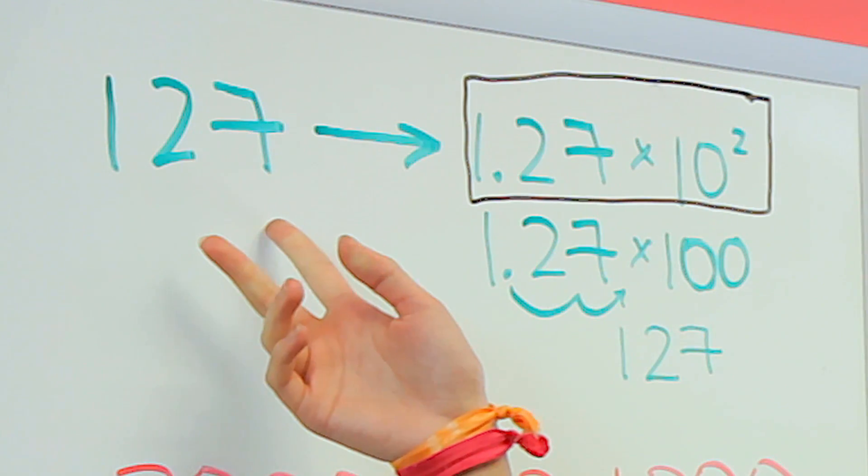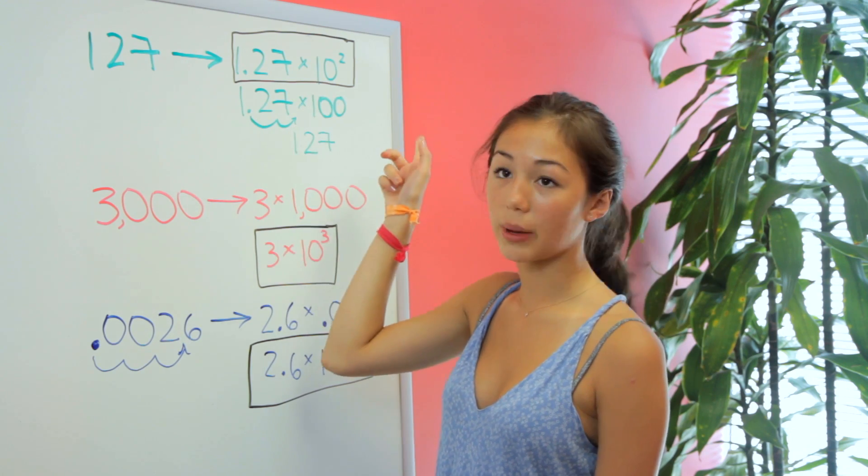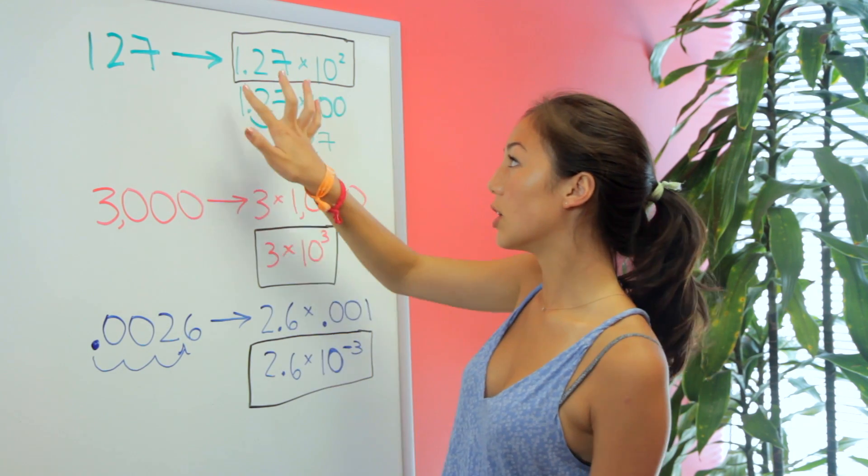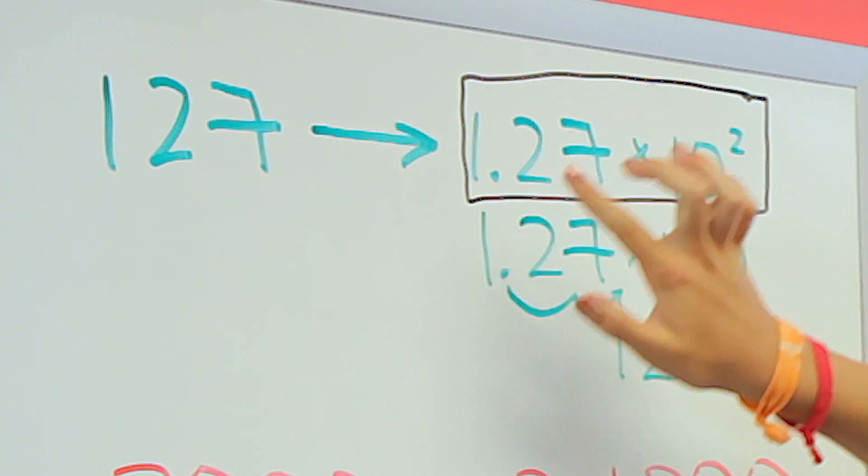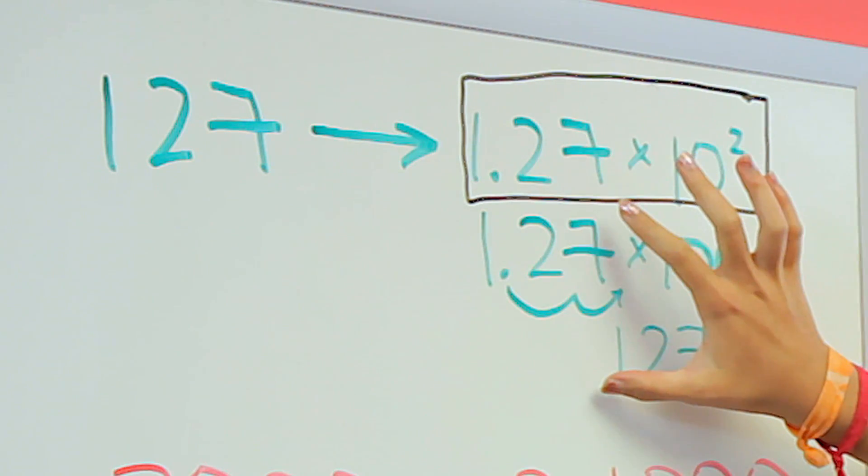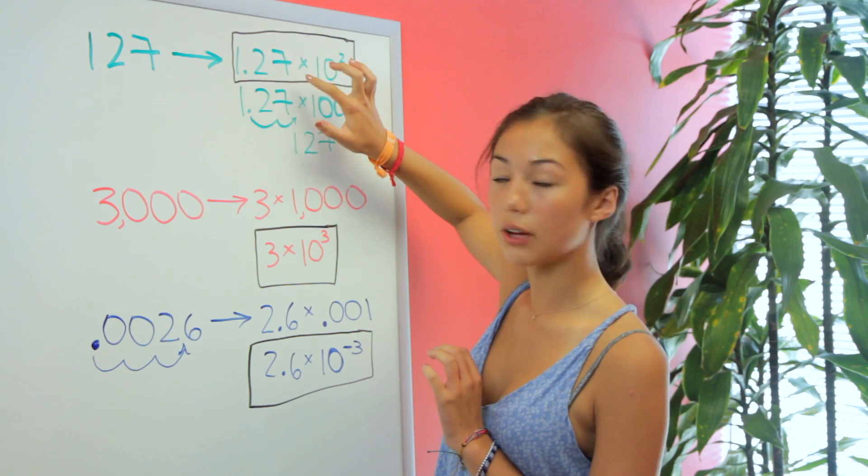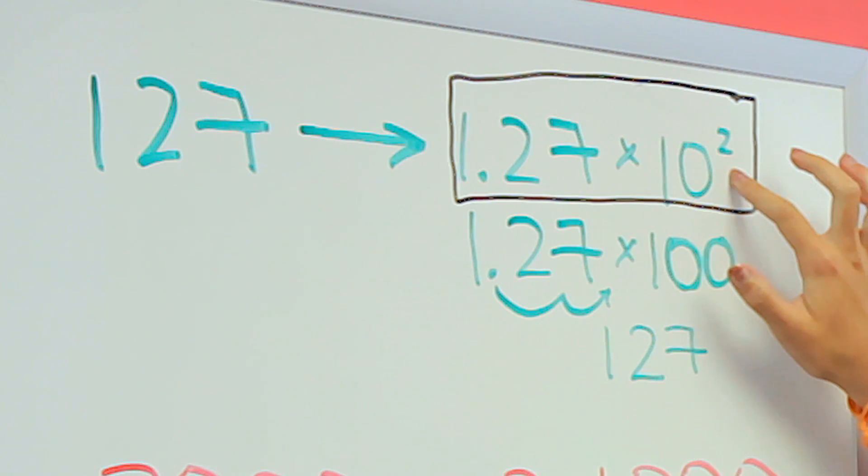So here's an example. We have 127, and we're going to write it in this format to make it less complicated. So this format is, you have just a single ones digit and a decimal. So here we're going to have 1.27 times 10 to the second power.